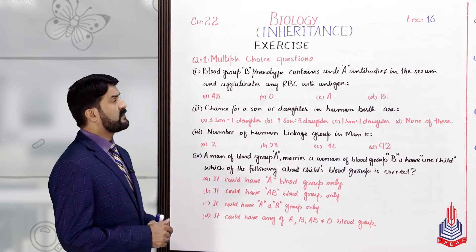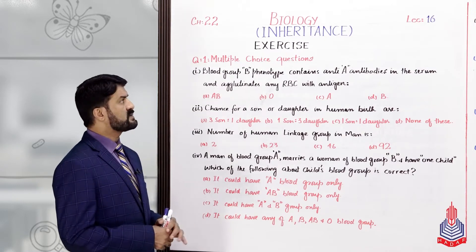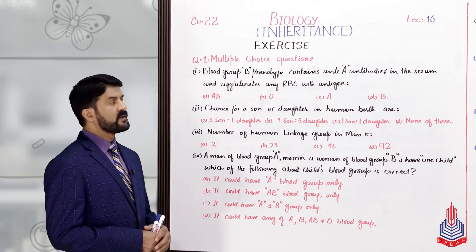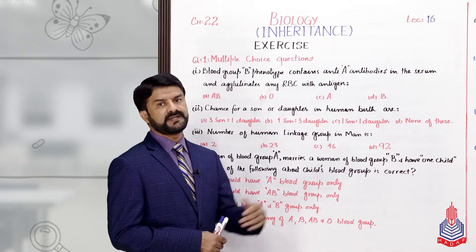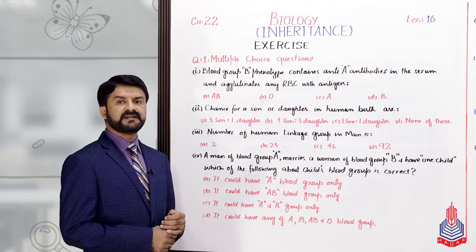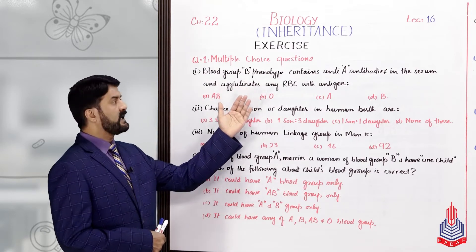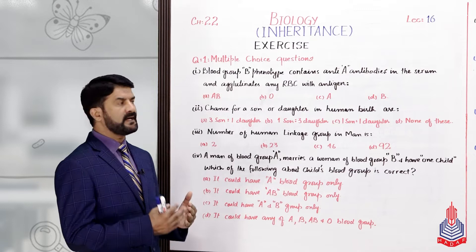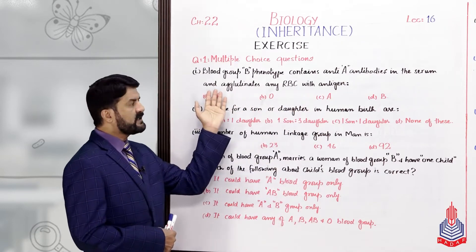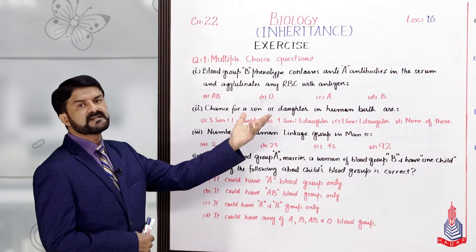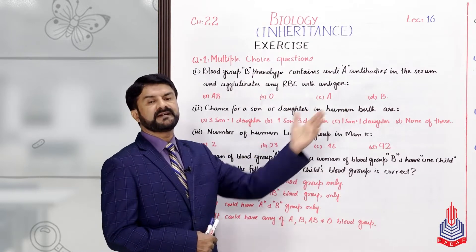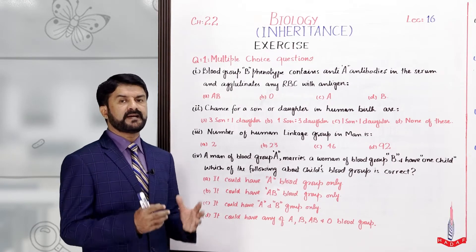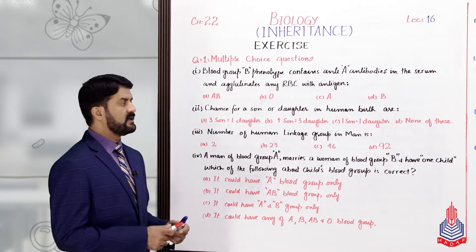Yes my dear students, you know very well that the first question in our exercise is the Multiple Choice Question. Let's see what the first MCQ is. Blood group B phenotype contains anti-A antibodies. That is, if someone's blood group is apparently B, then the antibodies found in that person will be anti-A. These antibodies agglutinate RBCs with antigen A.